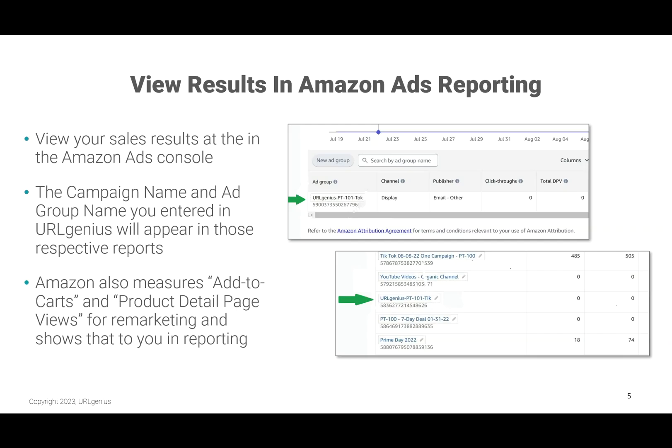After you start your campaign and you have more than 10 clicks, you can start to view your results in the Amazon Ads Console. Remember, the campaign name and the ad group name that you entered into URL Genius in the settings for the link will appear in those respective reports. Also remember, Amazon measures Add to Carts and Product Detail Page Views — Amazon automatically sends those shoppers into your remarketing funnel to give you credit for the sale and engagement.